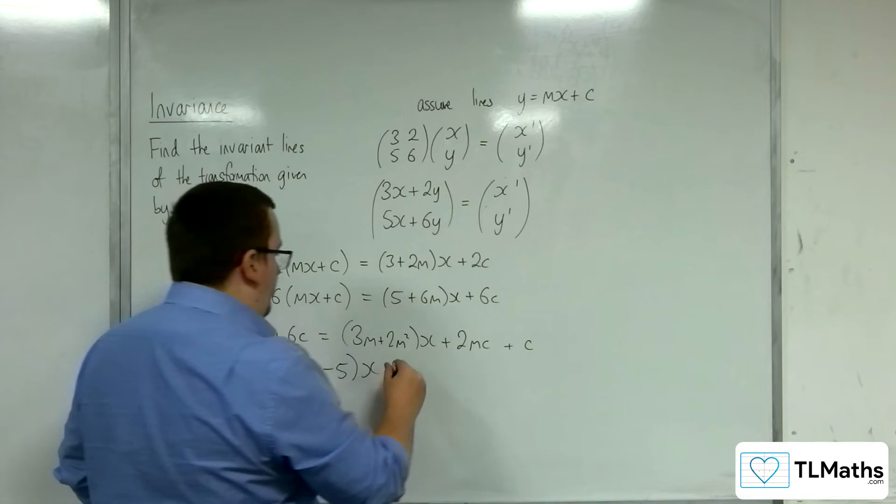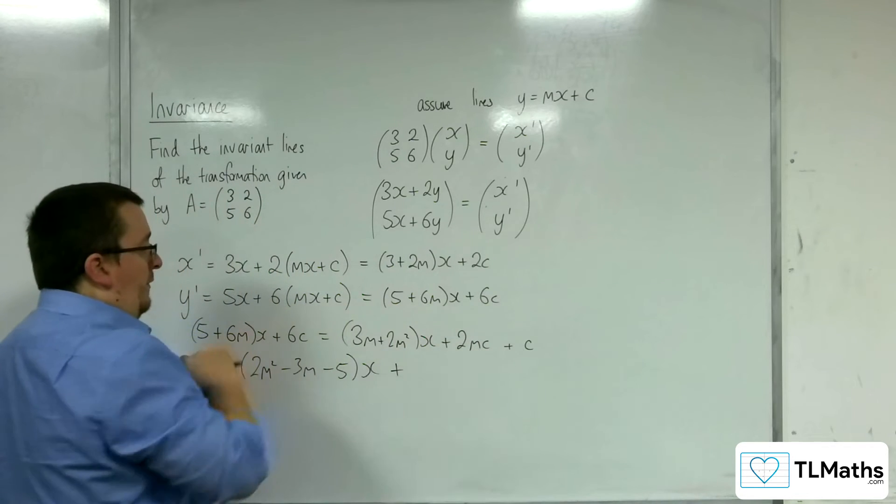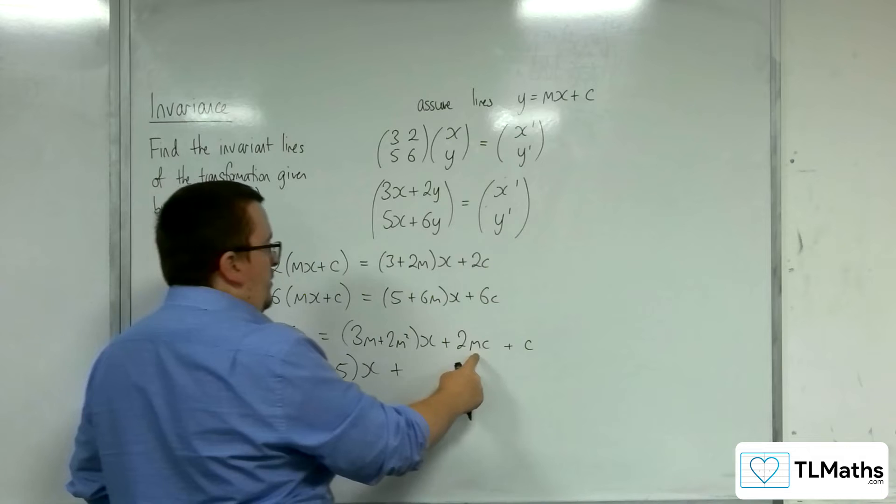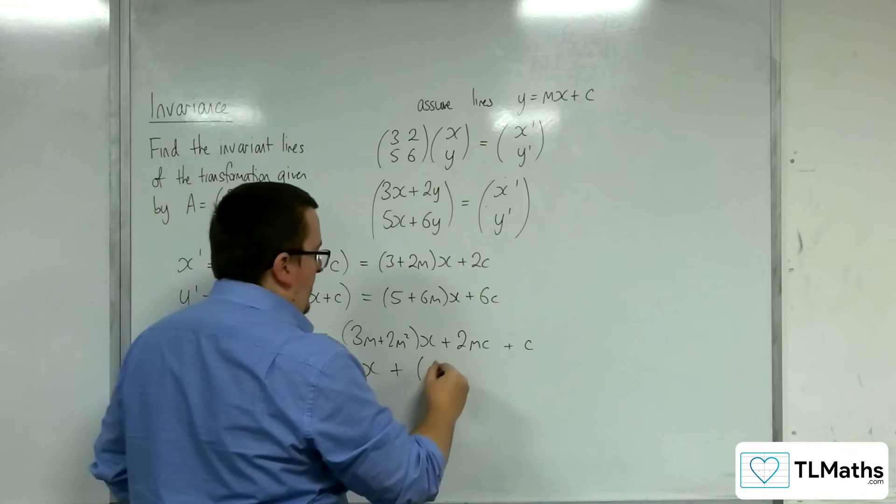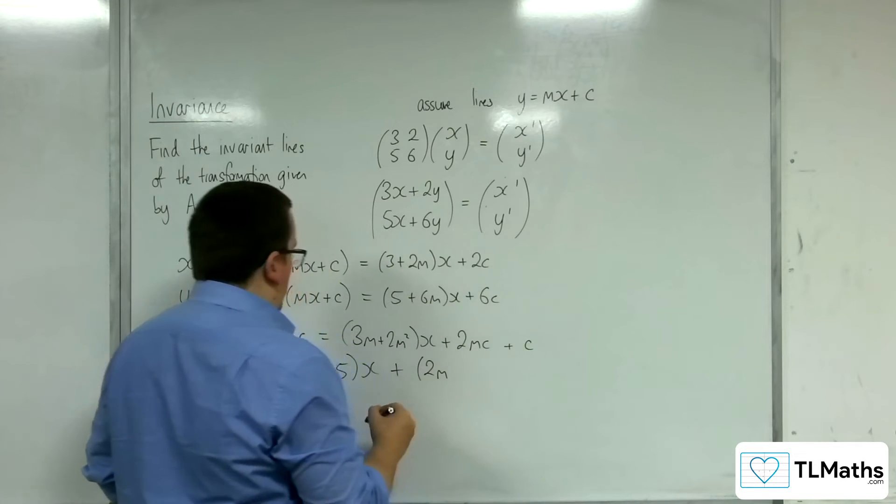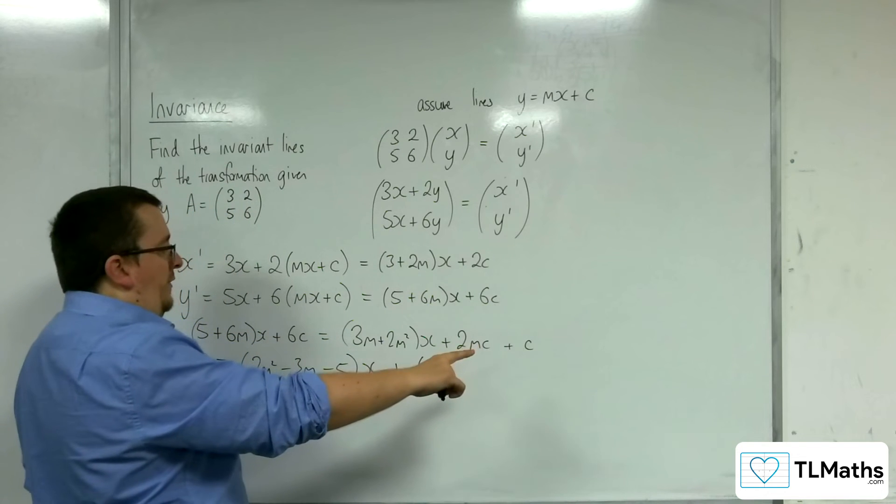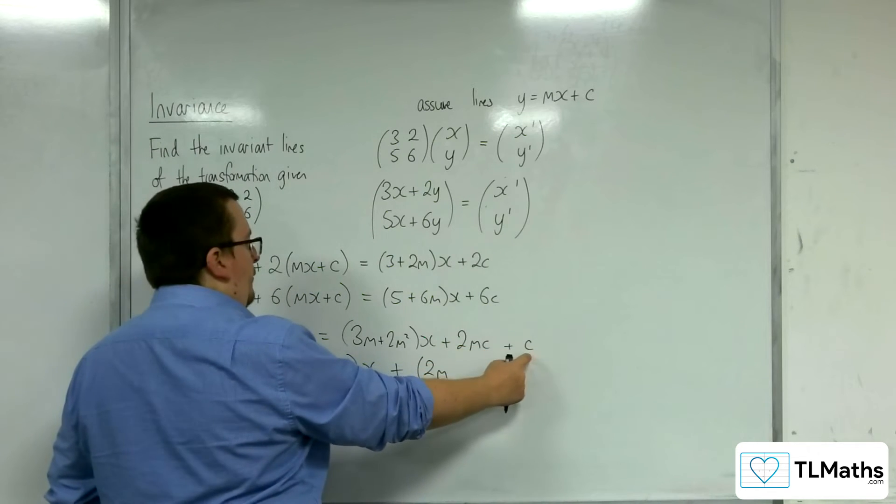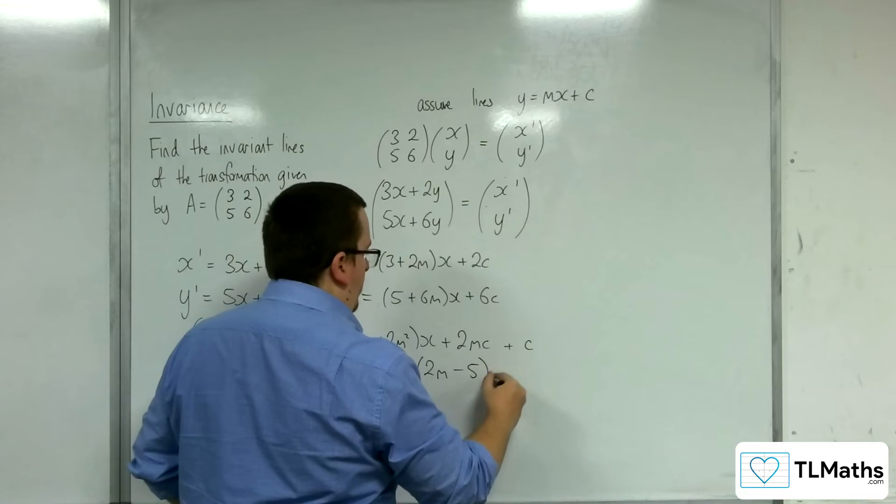Now what I've got left are the c's, the things that have the c in it. So I've got the 6c, the 2mc, the c here. So I can factor that out. So I'm going to have the 2m taking 6c from both sides. I'll get left with minus 5c over here. So take away 5c.